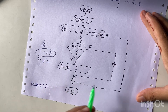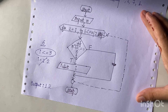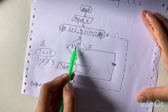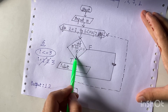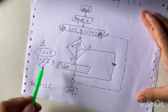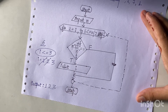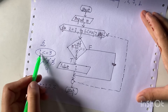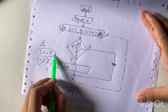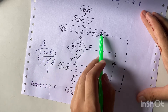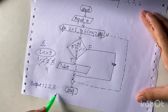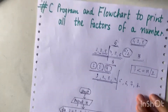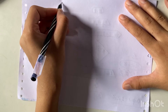When i equals 3: 6 mod 3 equals 0, condition is true, output is 3. Then after incrementing, i equals 4. Now 4 <= 3 is false, so we exit the loop and the code stops. The output is 1, 2, and 3 for n equals 6 — meaning the factors of 6 are 1, 2, and 3.